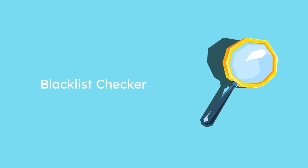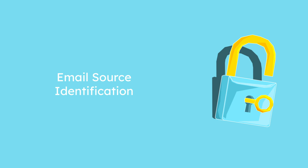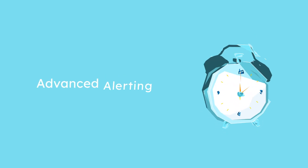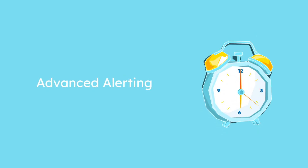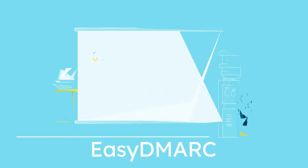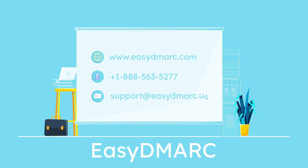Easy DMARC's reputation check tool checks your IP addresses or domains against popular blacklists. The email source identification tool gathers information about the sources that send on your domain's behalf and checks whether they are DMARC compliant or not. Another tool that our customers value is our advanced alerting system, which will notify your employees about phishing attacks and immediately find the sources. Would you like us to craft the perfect DMARC journey for you? Register today at easydmarc.com. Let's protect your domain together.